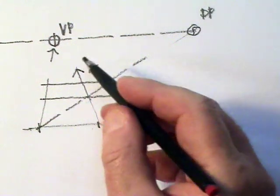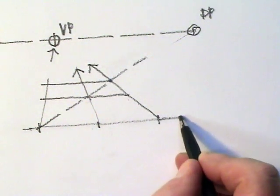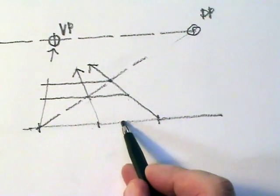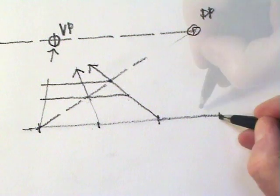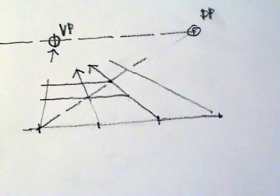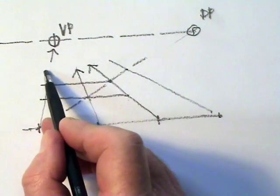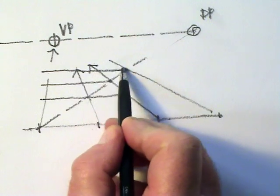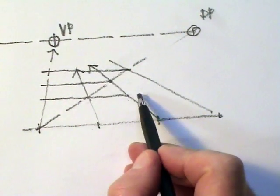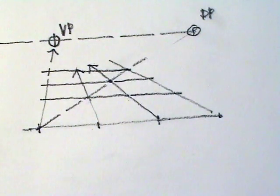Now if I wanted to go three or more grids back, I can extend this line, get this same distance here. Where it intersects there is my fourth grid back. So I could complete a three by three grid just like that.